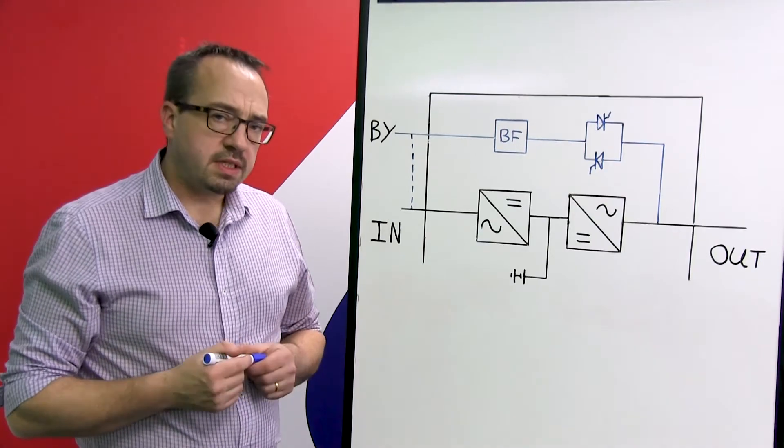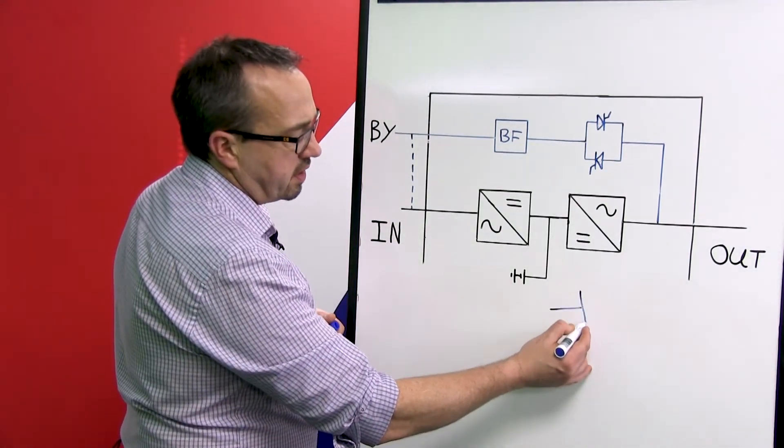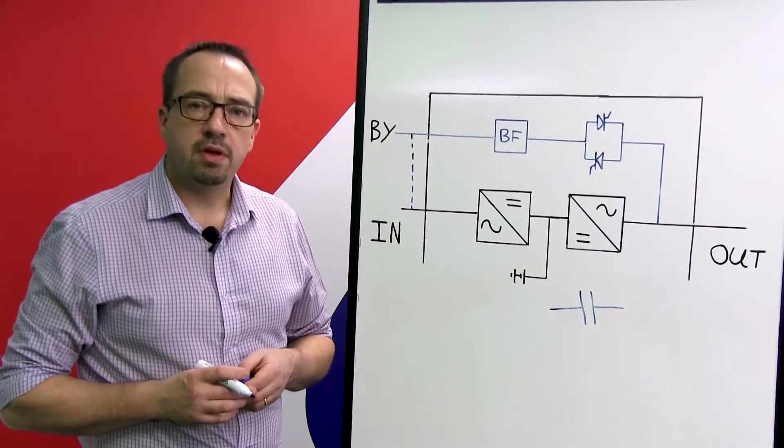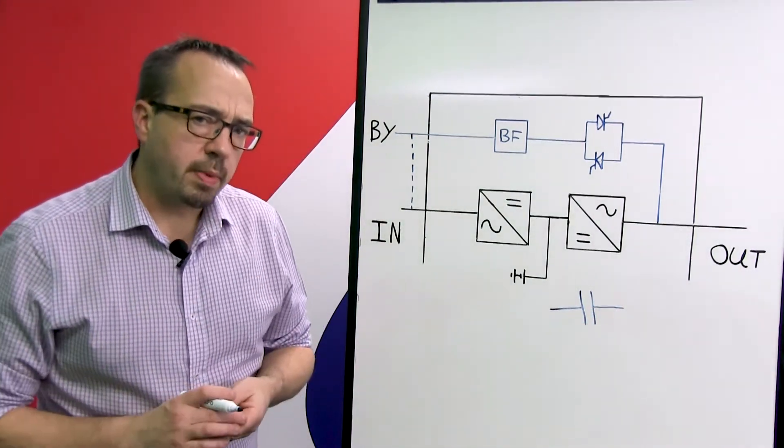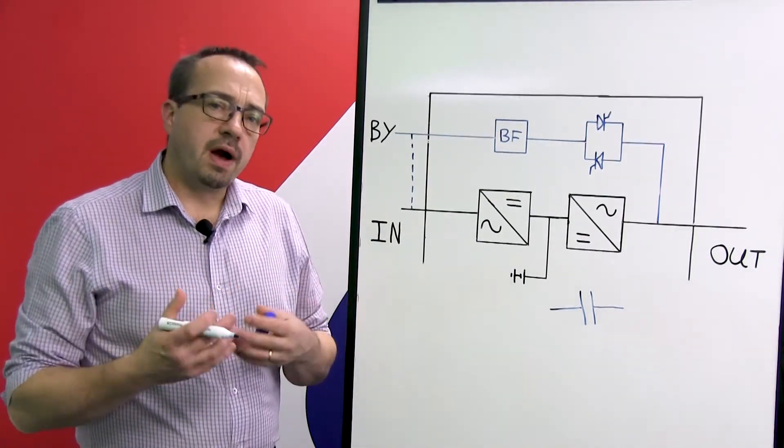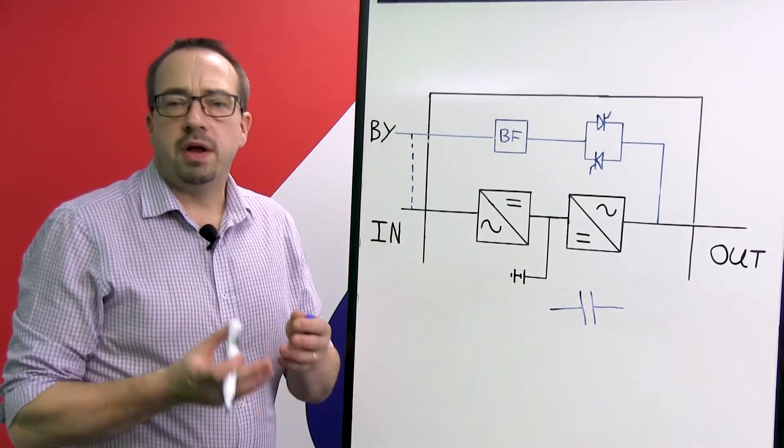Now inside each UPS system there are devices referred to as capacitors, and its symbol basically is similar to a battery but with two vertical lines of the same length. A capacitor is very similar to a battery, however a battery is a chemical reaction which is providing power for a prolonged period of time, whereas a capacitor will only give us back what we put into it minus losses.